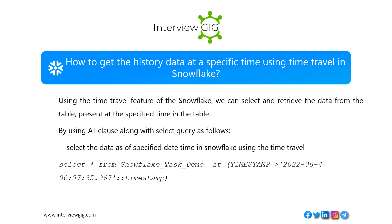How do you get history data at a specific time using Time Travel in Snowflake? Using the Time Travel feature of Snowflake, we can select and retrieve data from a table at a specified time, using the AT clause along with a SELECT query. For example: SELECT * FROM snowflake_task_demo AT (TIMESTAMP => '2020-08-04 00:57:35.967');